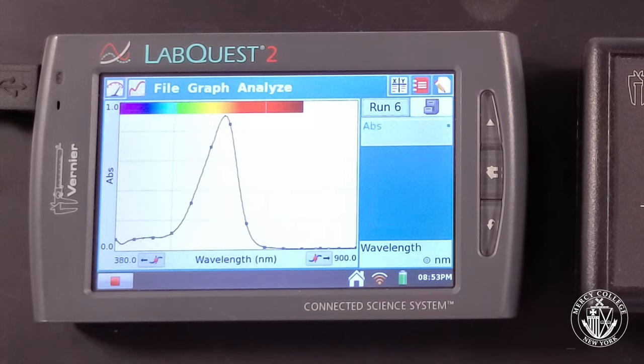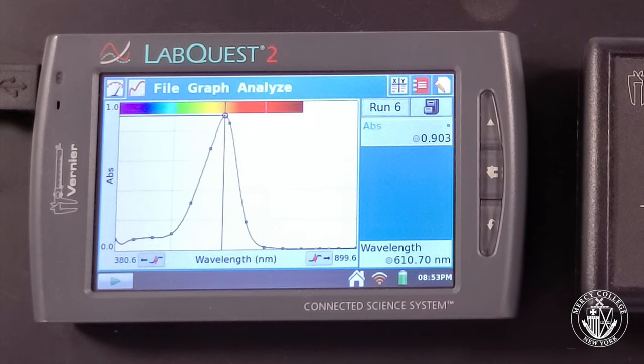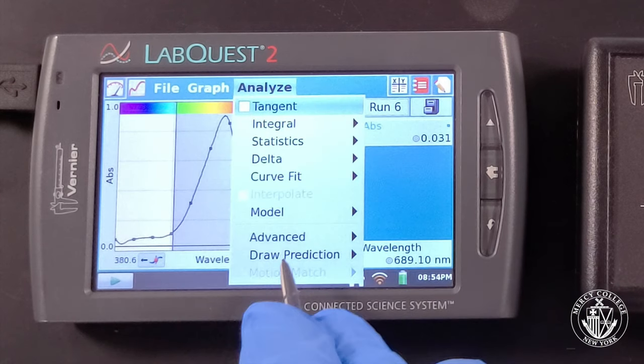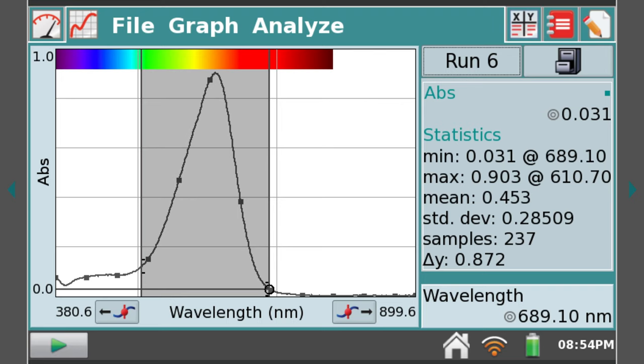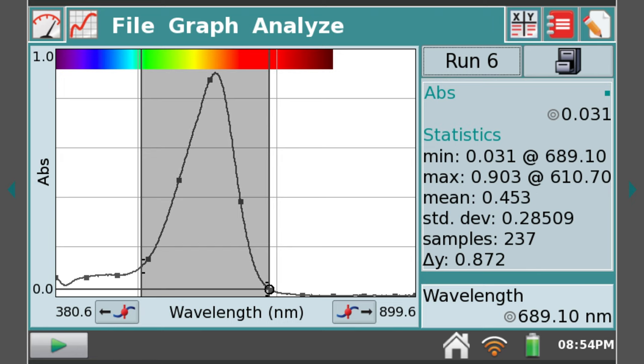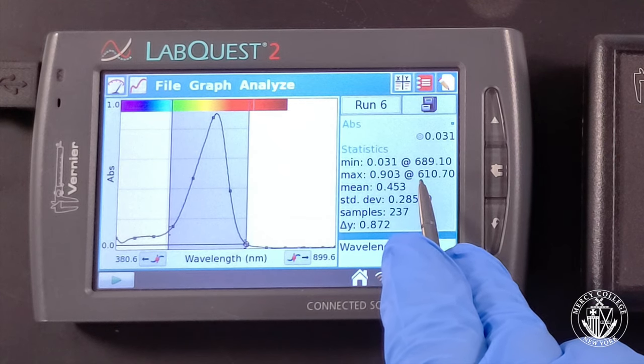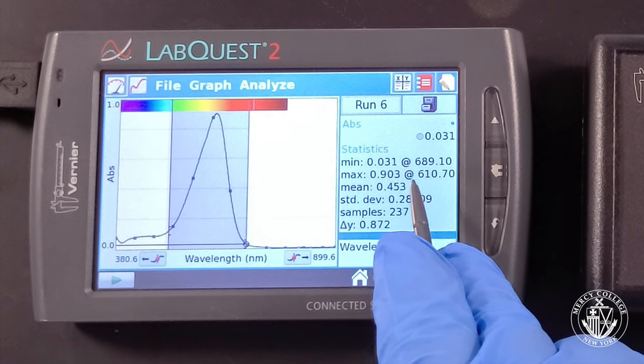Our last dye sample also appears to absorb in the yellow-orange region of the spectrum. It appears to have a maximum absorbance of 0.903 at a wavelength of 610.7 nanometers.